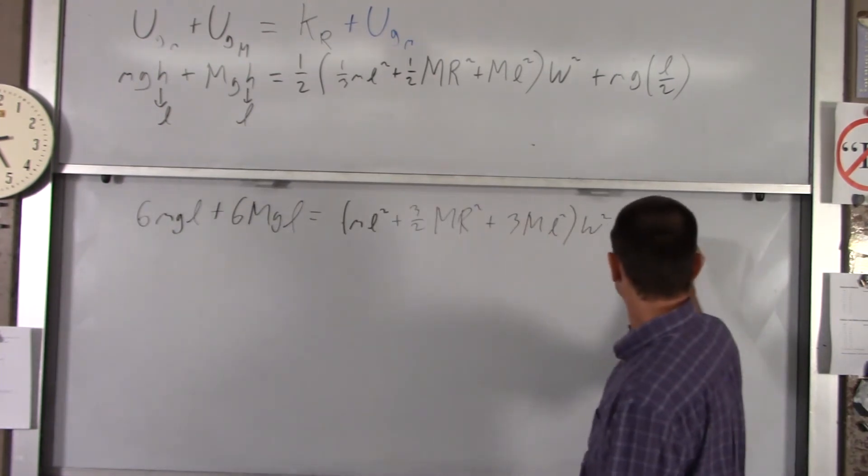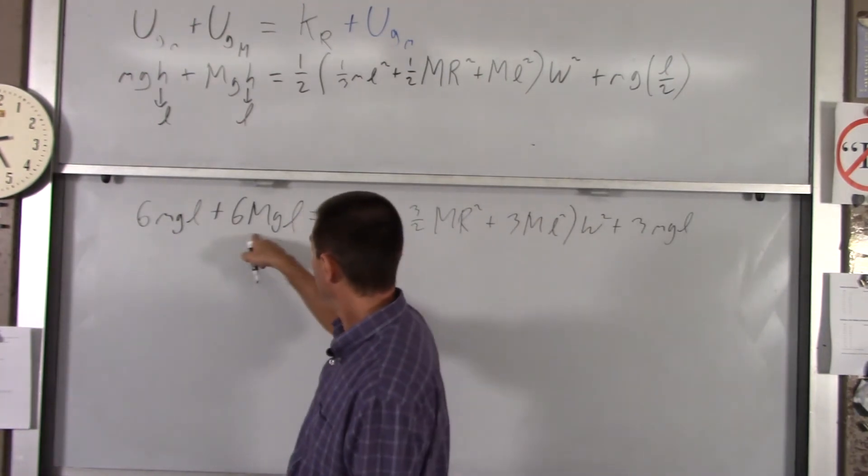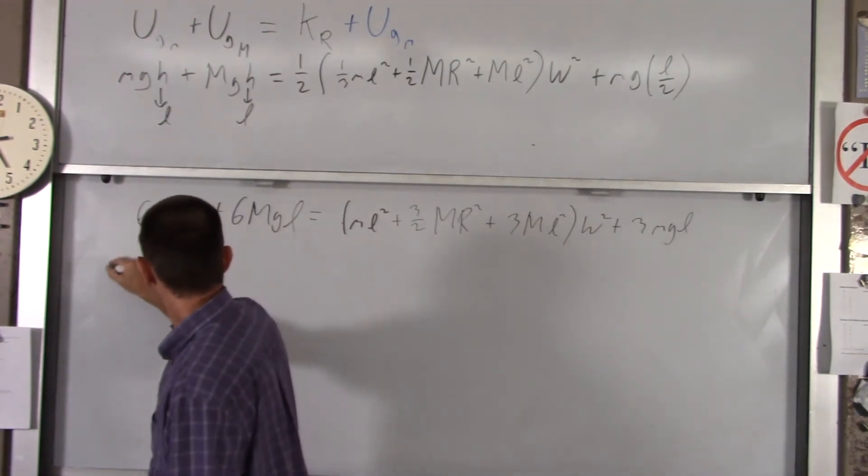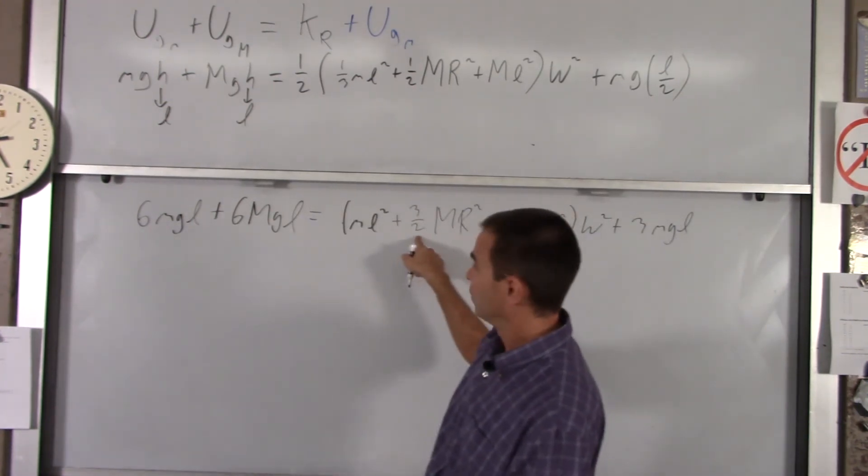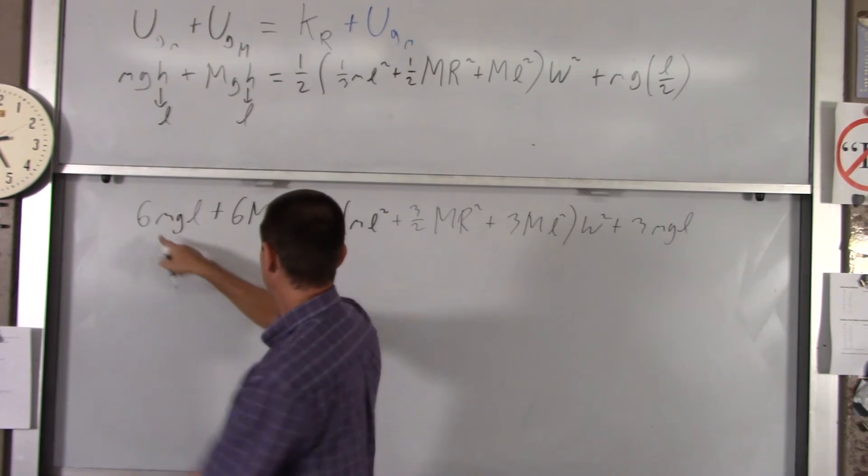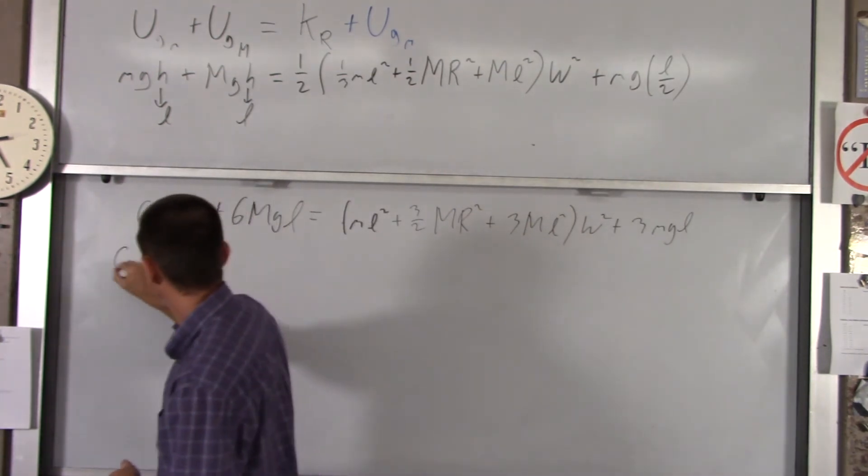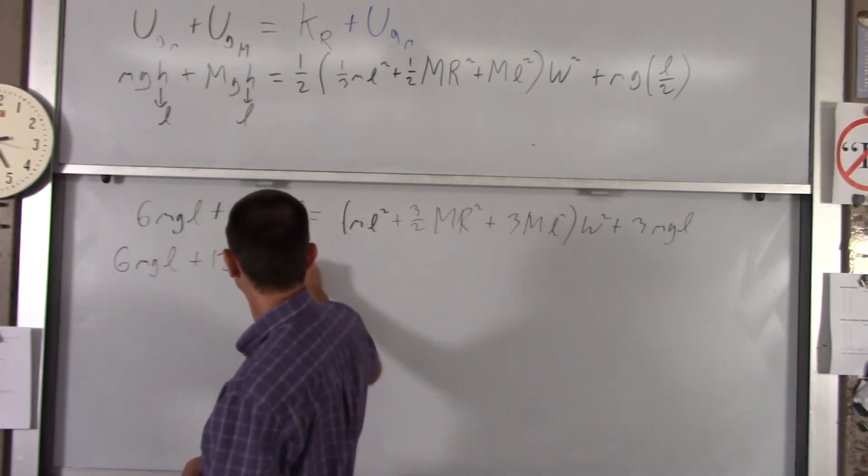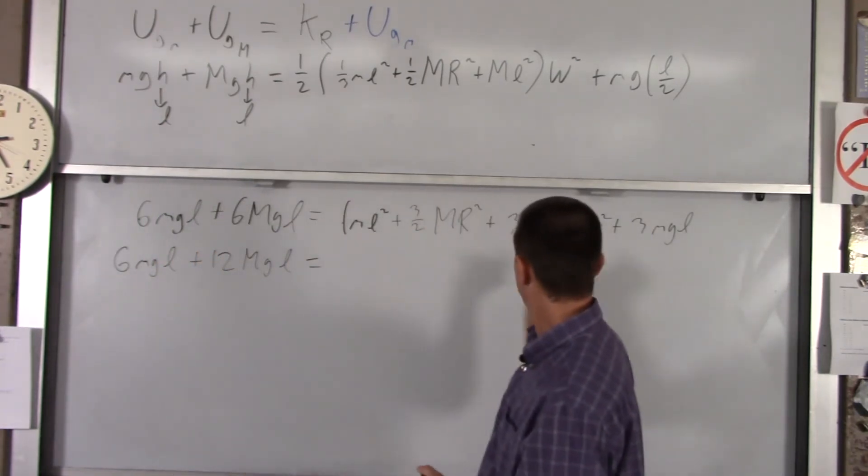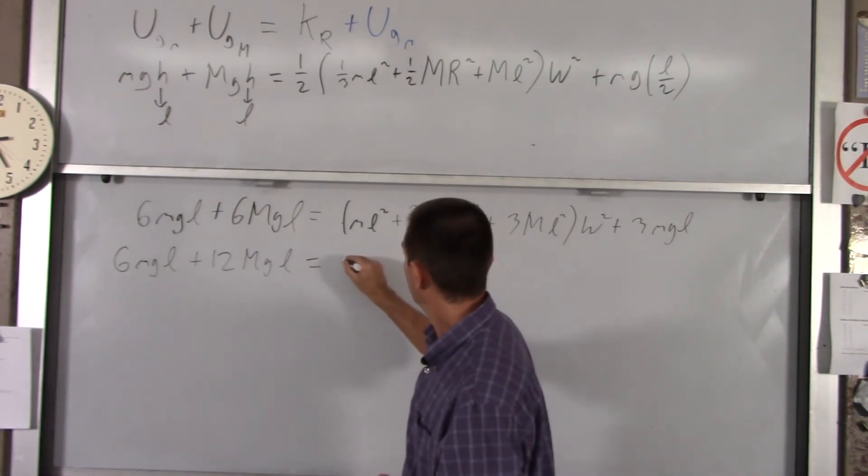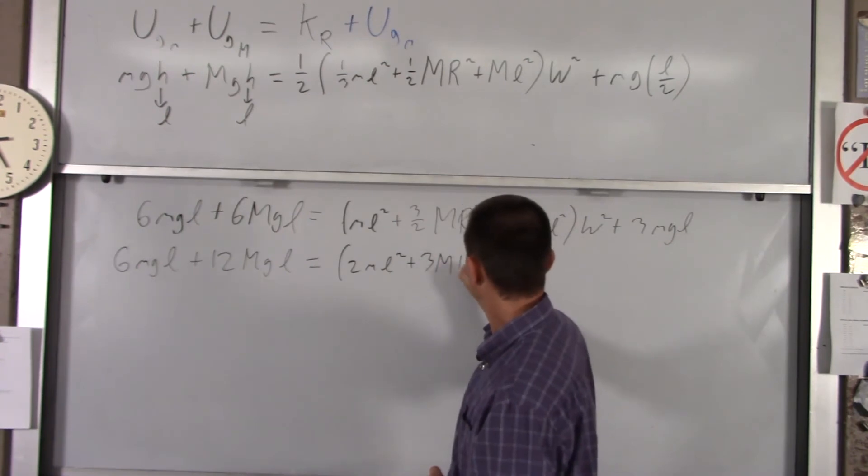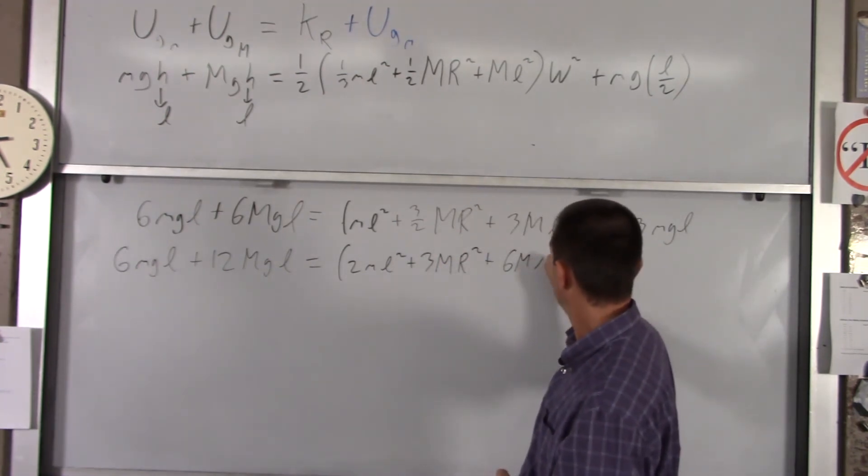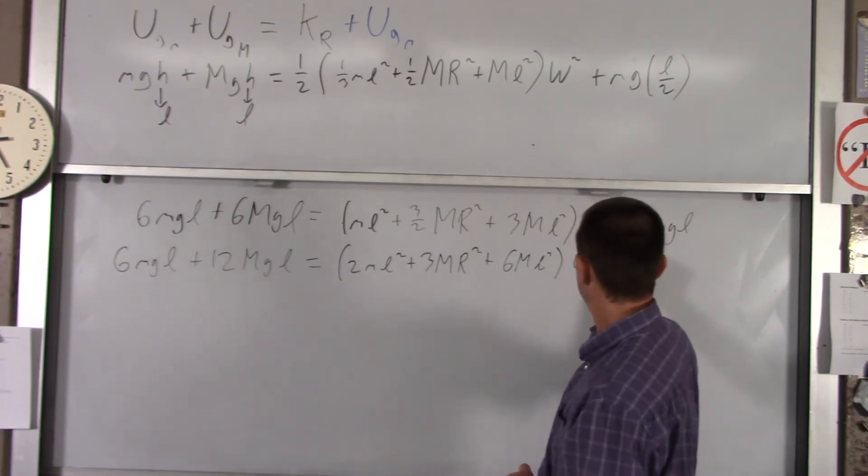We're going to subtract this from this and get rid of that, and then we'll double everything to make it simple. So this will become - this minus that's three times two is six - so we've got 6mgL plus 12MgL equals, if I double all this, we've got 2mL squared plus 3Mr squared plus 6ML squared omega squared.